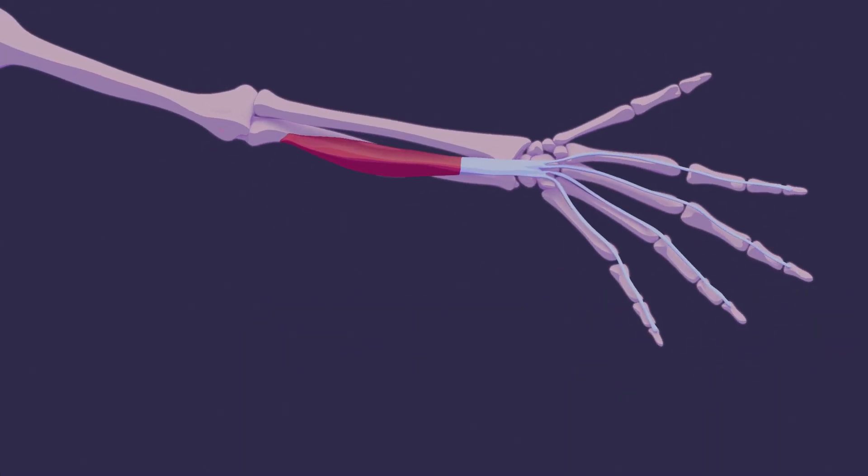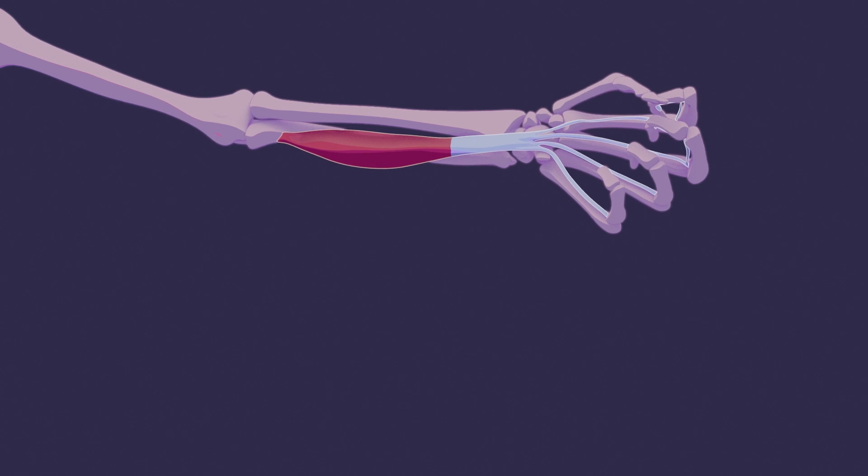Tendons are like ropes that connect your muscles to your bones. When a muscle gets the signal to move, the tendon moves the bone along with it.